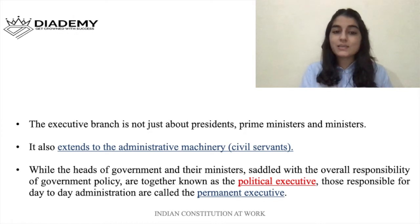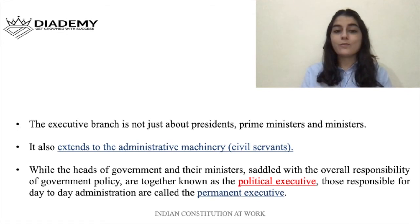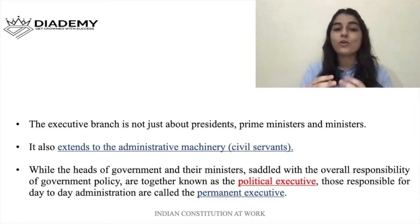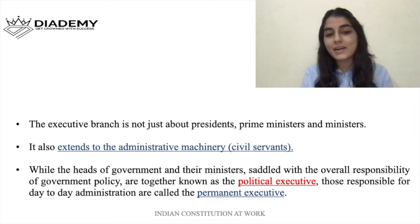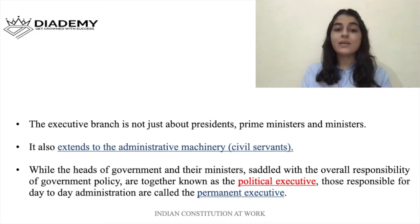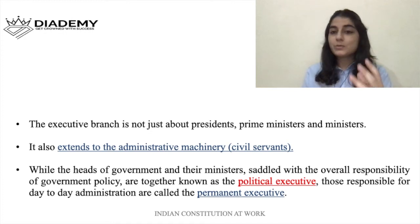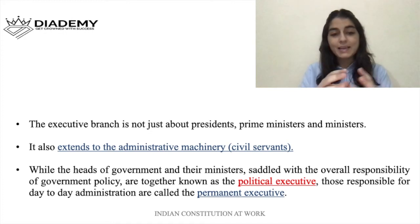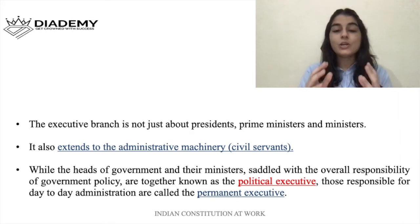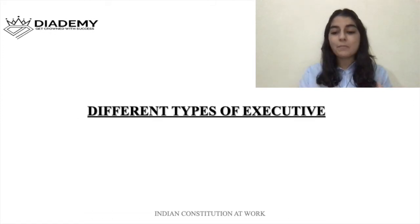Besides the political executive, civil servants also comprise the executive. The exam you are preparing for — IAS — those bureaucrats are also a part of the executive, and we call them the permanent executive. So there are two things to remember: political executive and permanent executive. The Prime Minister, ministers, President, and Vice President come under political executive, and civil servants come under permanent executive.